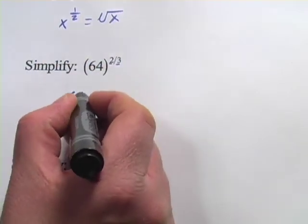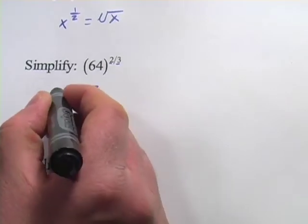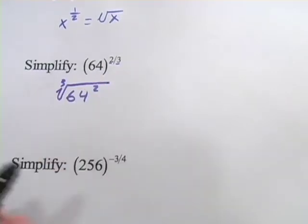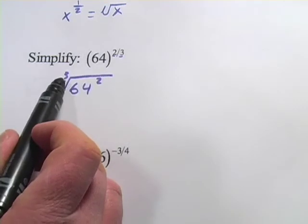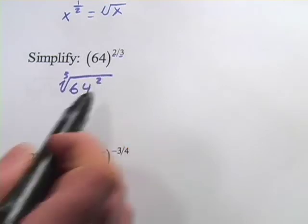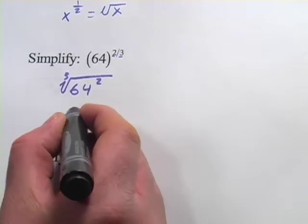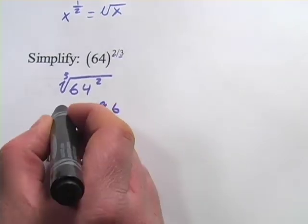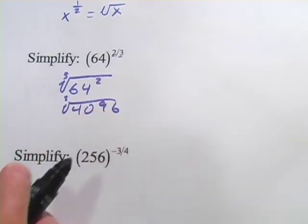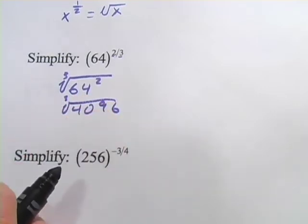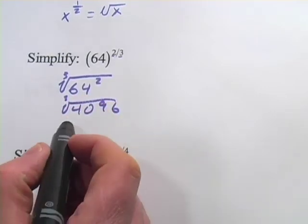So this is going to be 64 squared, and then take the 3rd root of that. So root is the denominator, exponent is the numerator. So let's see, 64 squared is going to be 4096. You probably need a calculator for this. And the cube root of 4096 is 16.